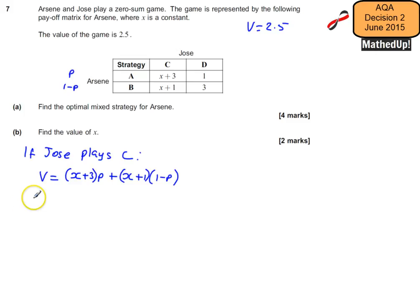So I'm going to put 2.5 is equal to, and I'm going to expand this to tidy it up a little bit. So we've got xP + 3P + x - xP + 1 - P. Simplifying that, we've got 2.5 is equal to xP - xP makes no P.